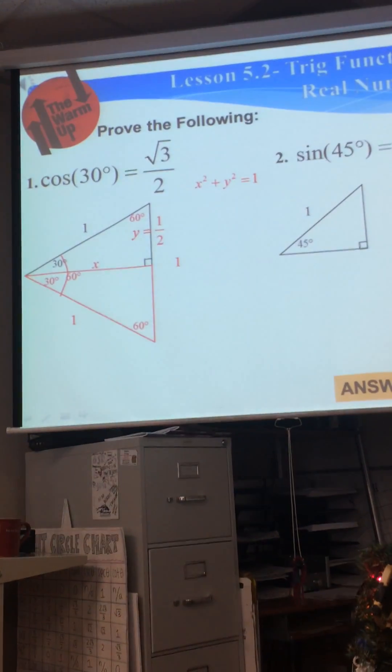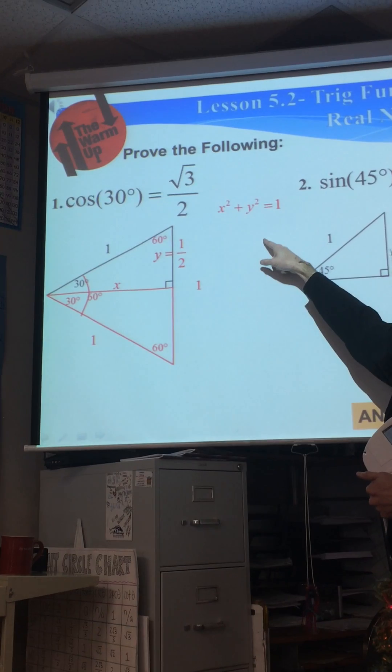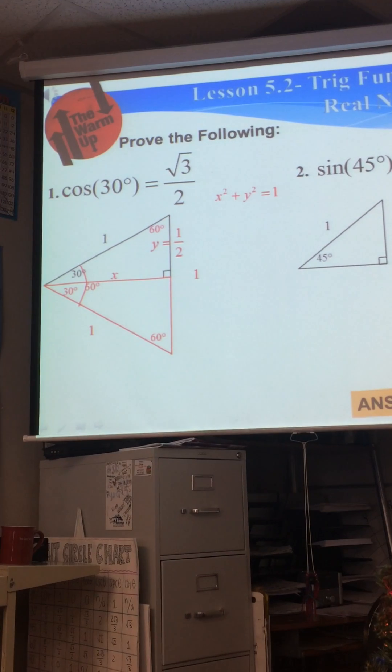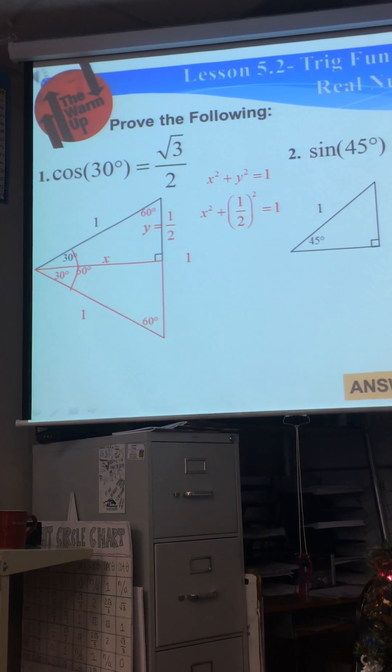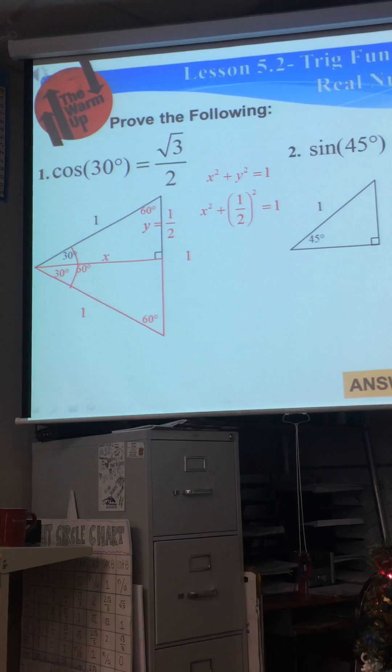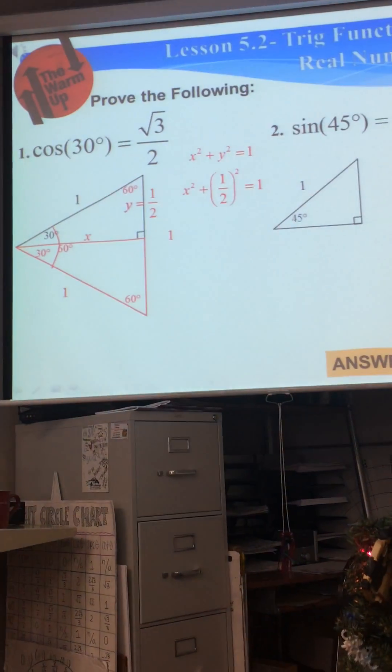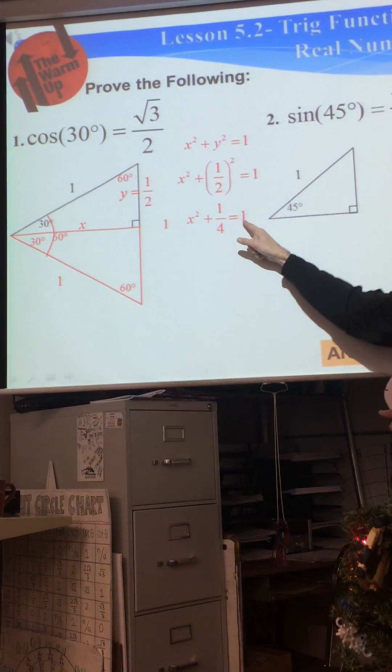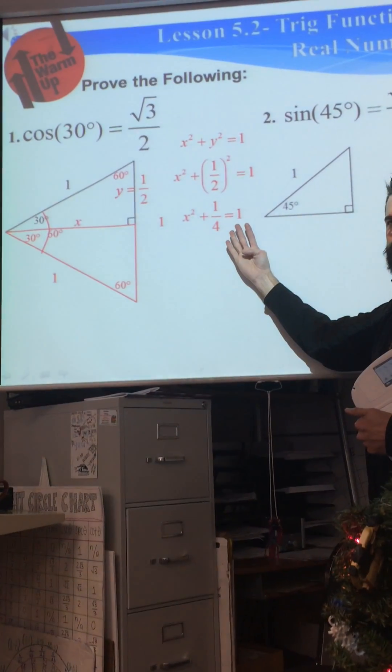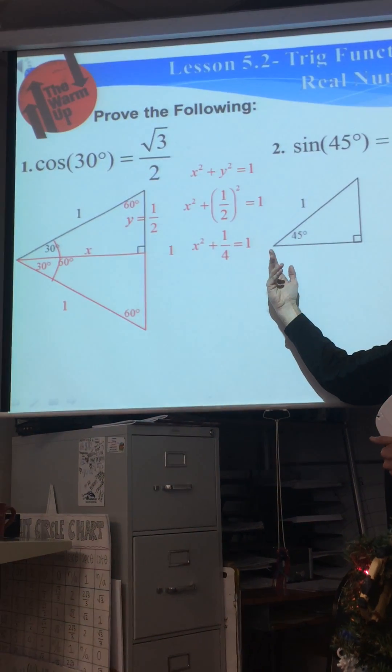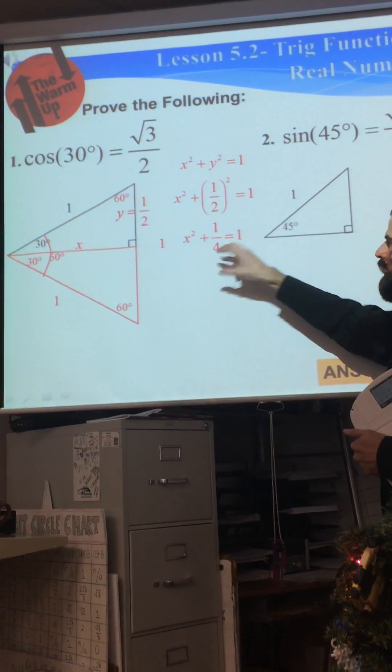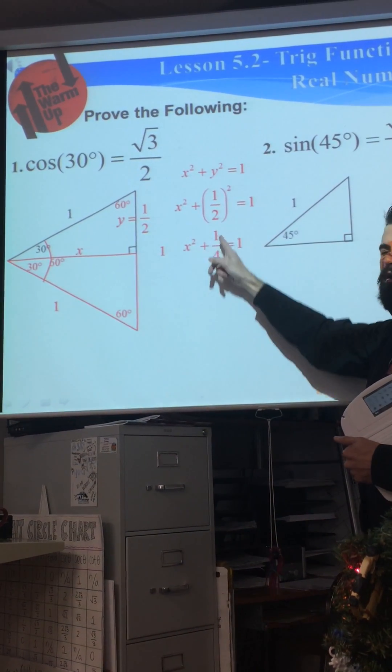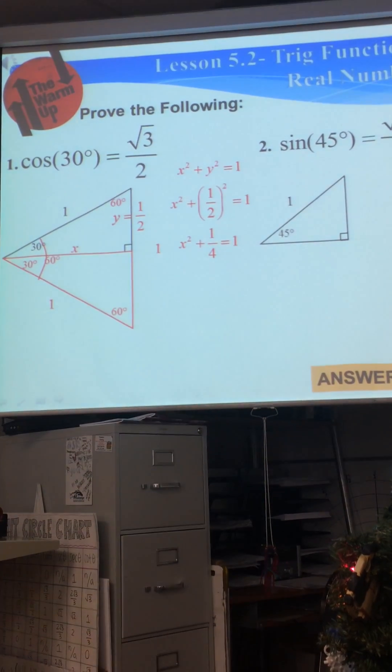If y is 1/2, we have to square that. What's 1/2 squared? 1/4. Okay, 1/4. Now another way of writing 1 would be 4/4, right? Isn't 4 divided by 4 equal to 1? So we have 4/4 and we're going to move this over to the other side. So what's 4/4 minus 1/4? Good, 3/4.